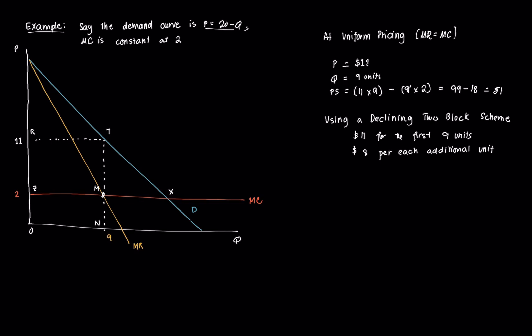So under a uniform pricing scheme, under this uniform pricing scheme, the monopolist will earn a profit or captures a profit equal to 81. And part of which goes to the total firm's fixed cost and part of that goes to profit.